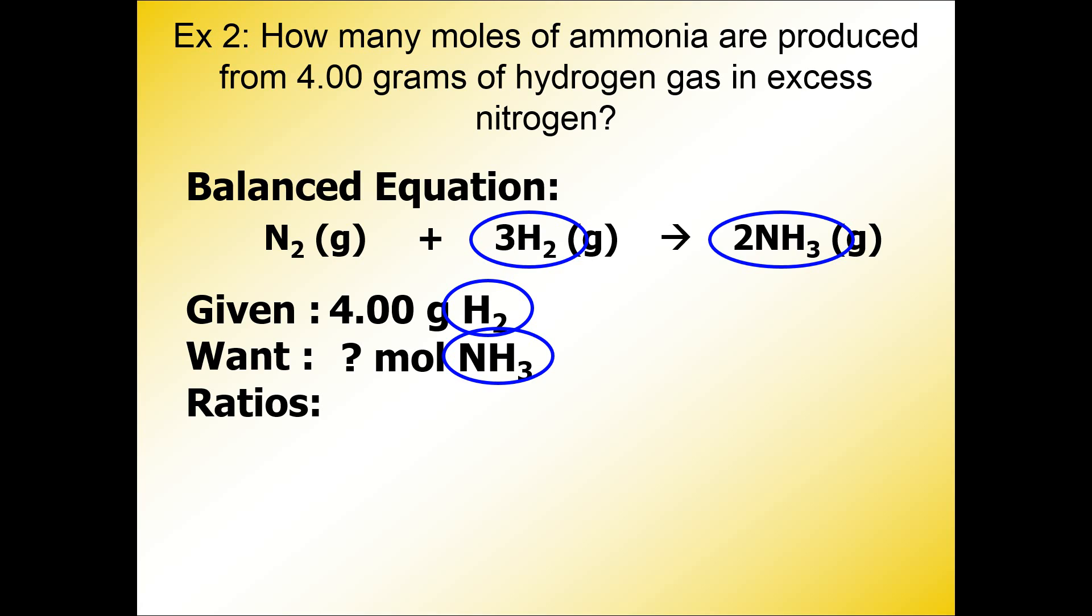The mole-to-mole ratio is taken from the coefficients in front of the formulas, and it looks something like this. For every two moles of NH3, there are three moles of H2. Now, it doesn't matter if I have this ratio flip-flopped. It actually would mean the same thing if I flip-flopped them.